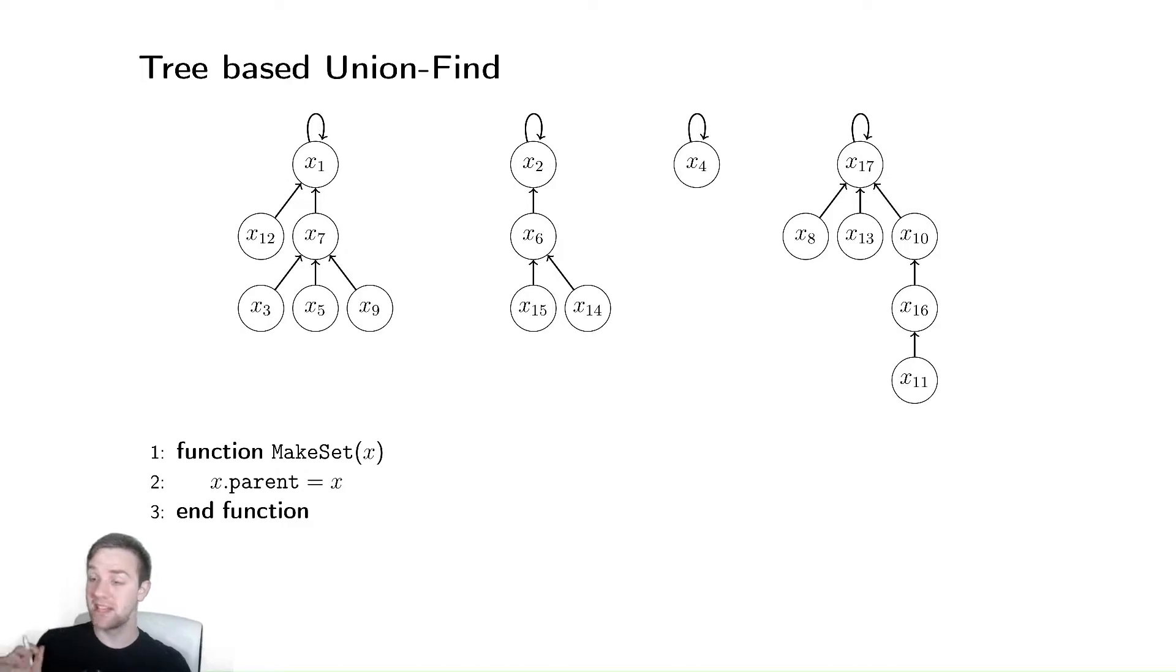And when we set up a tree, all we're going to do is set the node's parent to be itself. So rather than having the parent point at nil, we're going to have it point at itself as a different sort of way of representing the parent of the root. So when we make a set, we have the parent point at itself.